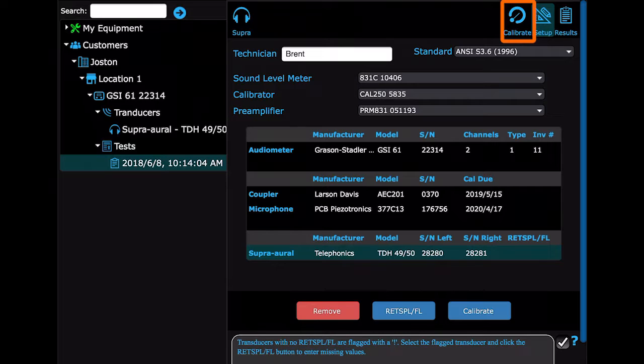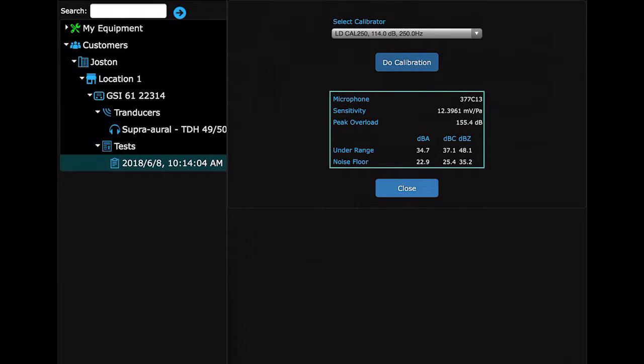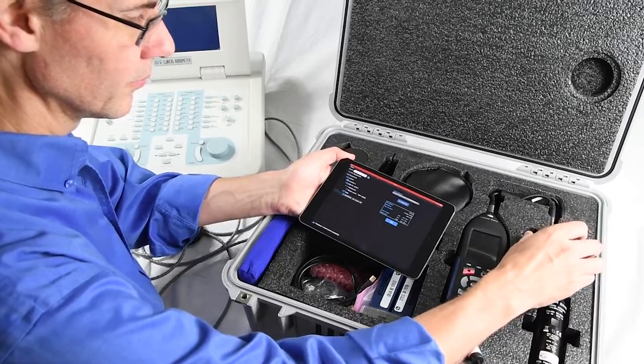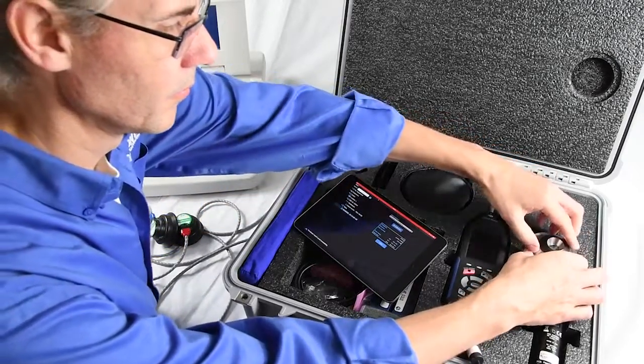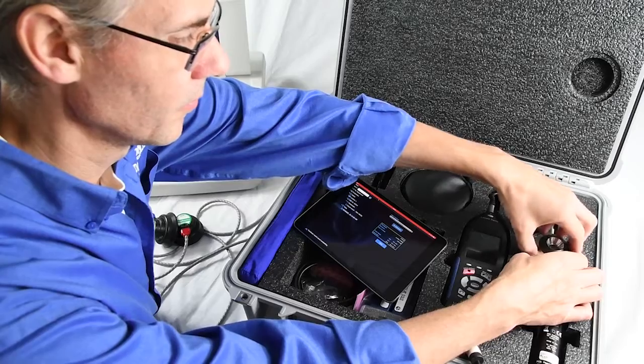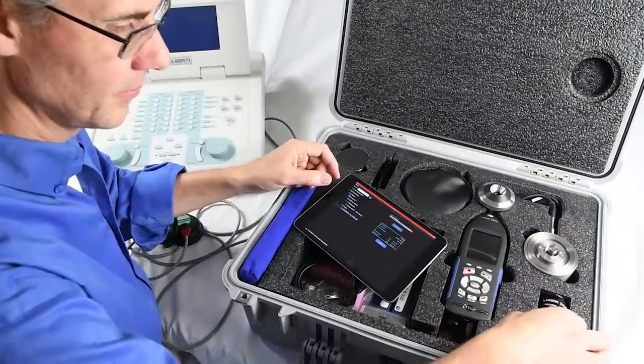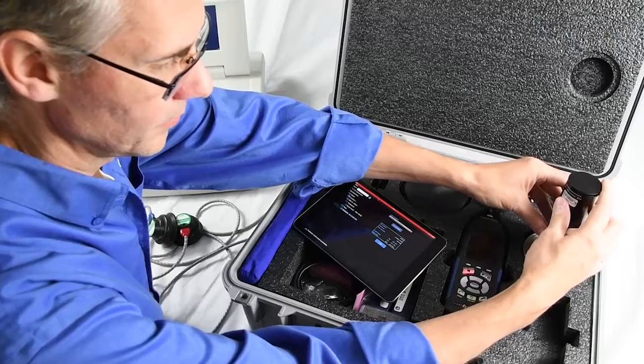Navigate to the Calibrate icon in the top. Remove the top of your coupler to expose the microphone. Make sure that you don't remove the grid cap off of the microphone. If you do, gently screw it back on. Place the calibrator over the microphone.